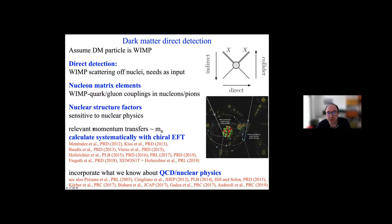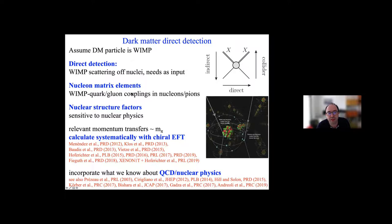If you look at the expected recoil from a WIMP scattering off of a nucleus and convert to momentum transfer, you find that the momentum transfer in dark matter particles scattering off a heavy nucleus is low — great for EFT — but may reach up to the pion mass. So it's actually perfect for chiral EFT. We were triggered to look at this by a colloquium by Laura Baudis in Darmstadt in 2012, and since then have been working on deriving nuclear structure factors and nuclear matrix elements based on chiral effective field theory to provide nuclear physics input for dark matter direct detection.